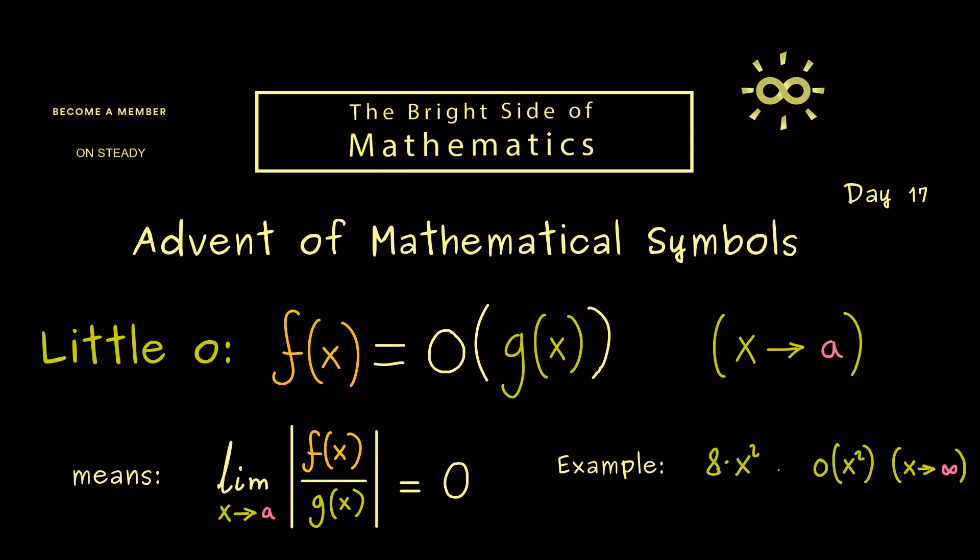So here you should see we do not have that the limit on the left-hand side goes to 0. So this function is not of little o x squared when x goes to infinity.